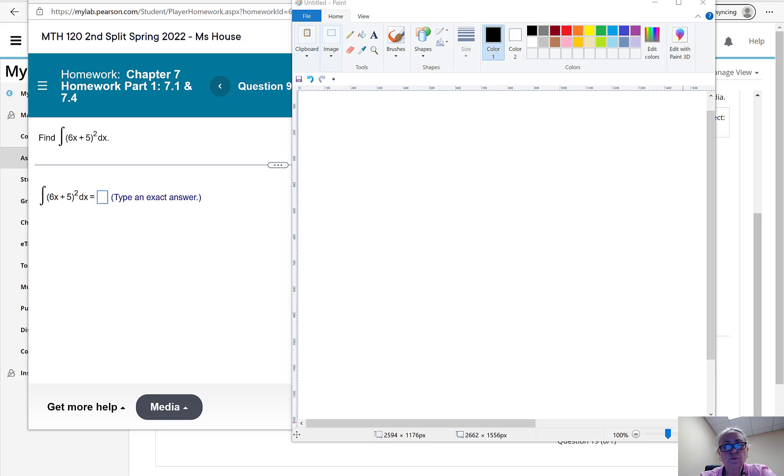Hi, it's Ms. House. We're going to do another problem that requires u-substitution. Our problem is integral of (6x + 5) to the second power dx.